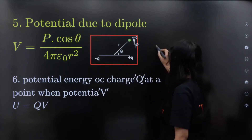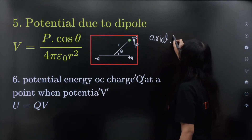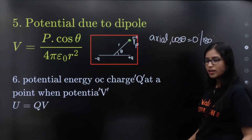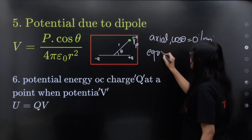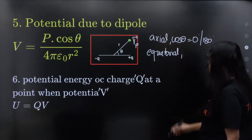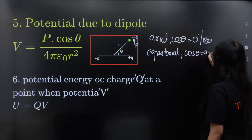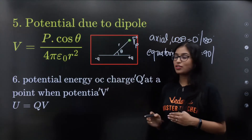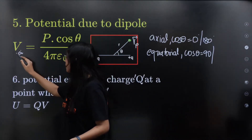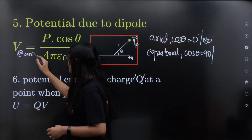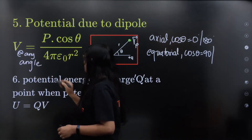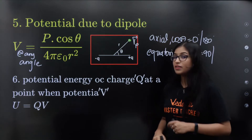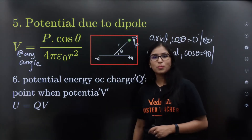R is the distance. For the axial position, cos θ is either 0° or 180°. For the equatorial position, cos θ is 90°. At any other angle — like 65° or 75° — you can directly use the formula. Okay?